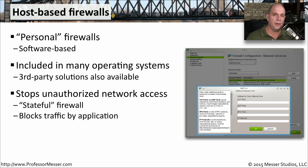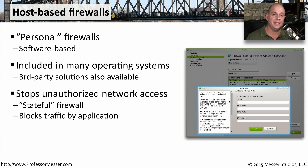When you talk to another device, you're communicating from your IP address and a port number to an IP address and port number on another device. The firewall recognizes this and keeps track of all the different connections you've made and over what port numbers. If any traffic comes into your device that is not on this list — not part of the current state — that information is automatically dropped by the firewall.